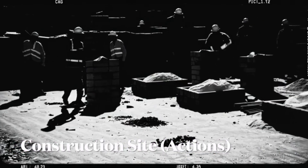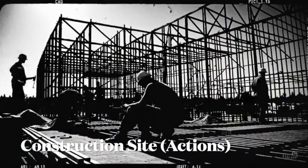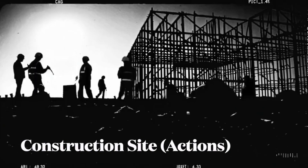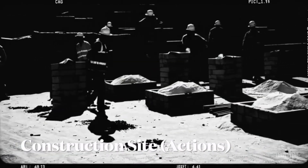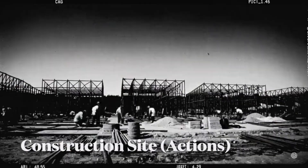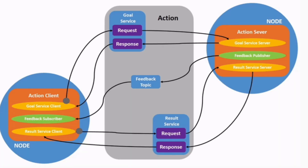Some tasks, however, unfold over time. Consider commissioning a construction project: you submit a goal, receive periodic progress reports, and ultimately a final result. In ROS 2, these are actions. A navigation node sends a goal — 'Move to waypoint.' The action server provides feedback: distance remaining, obstacles detected, percentage complete — until the task concludes. Actions elegantly manage asynchronous, long-duration activities.